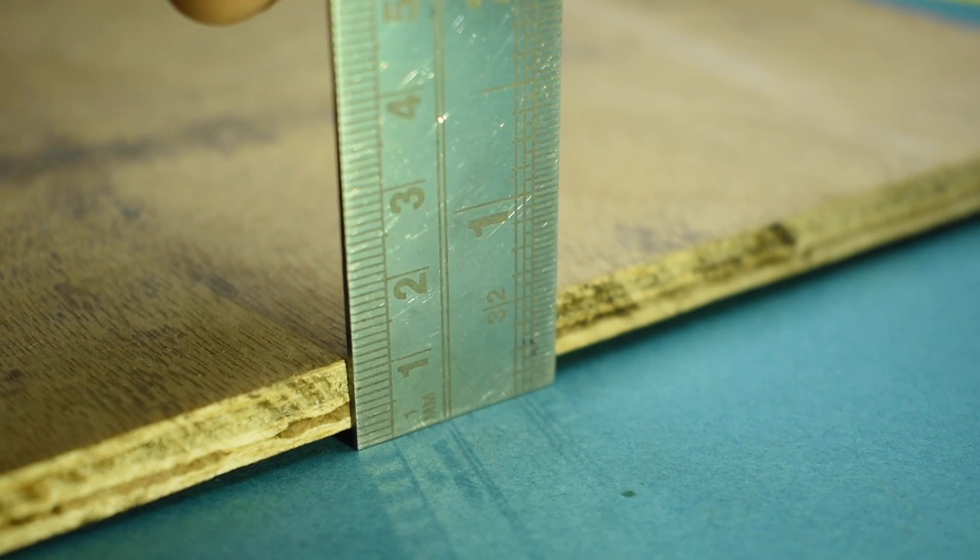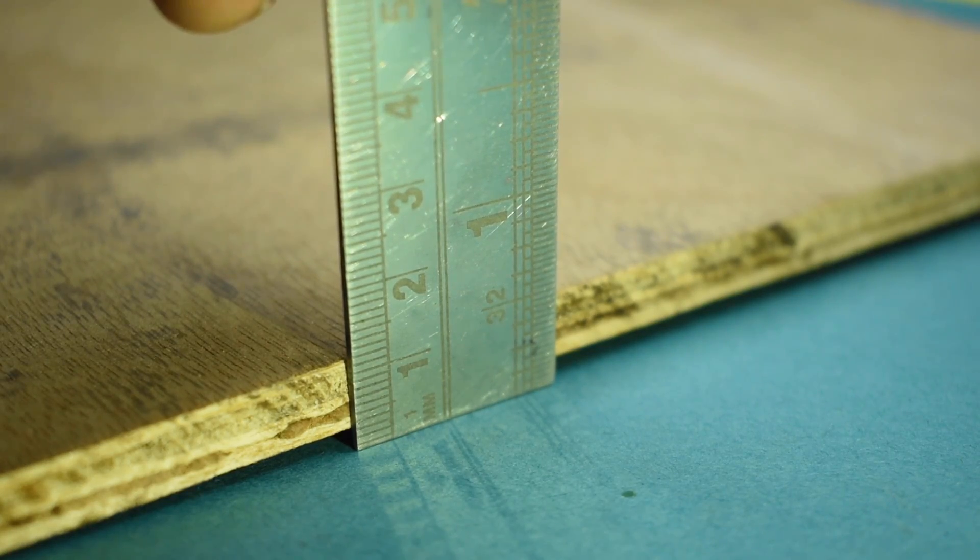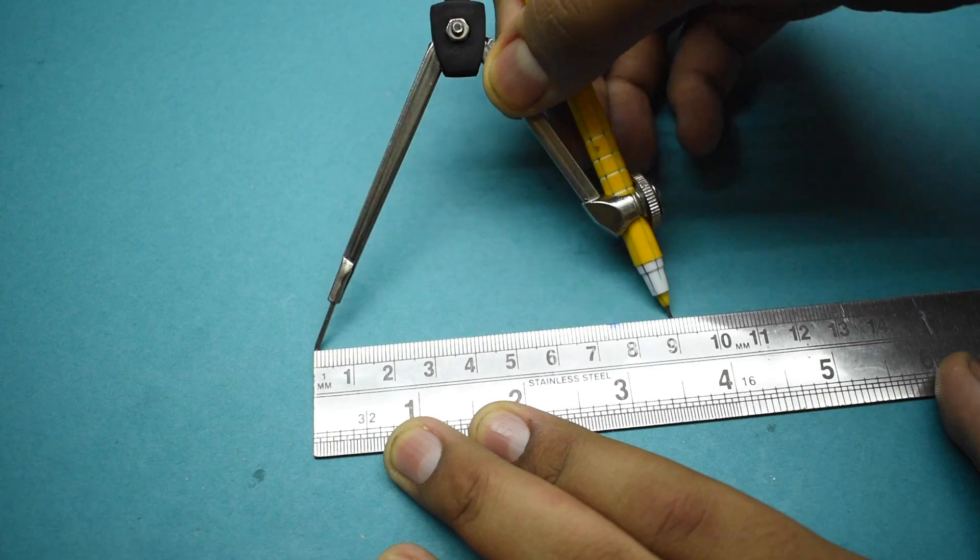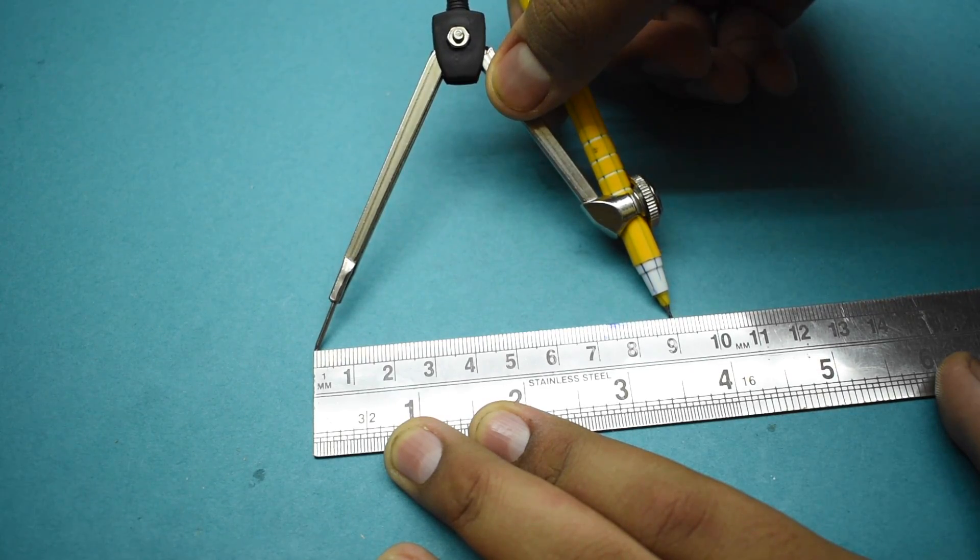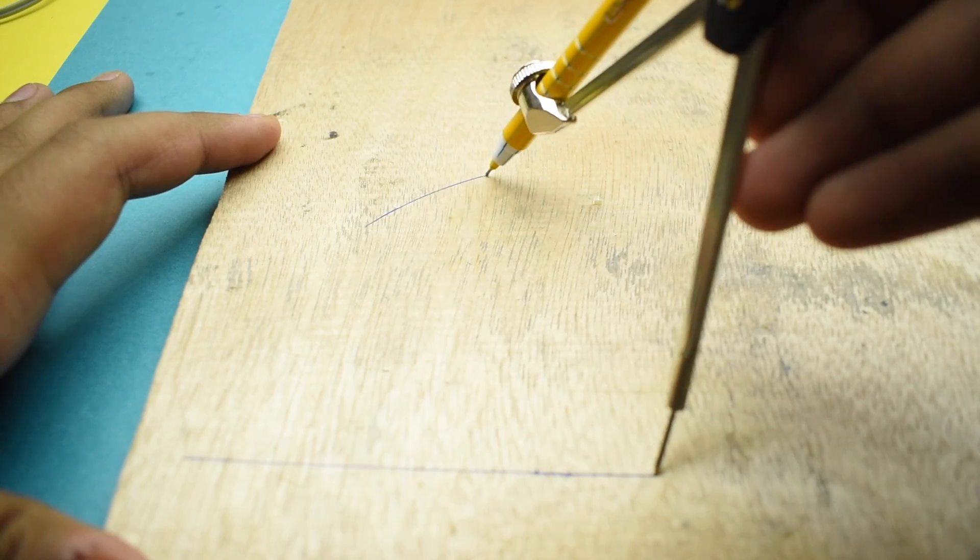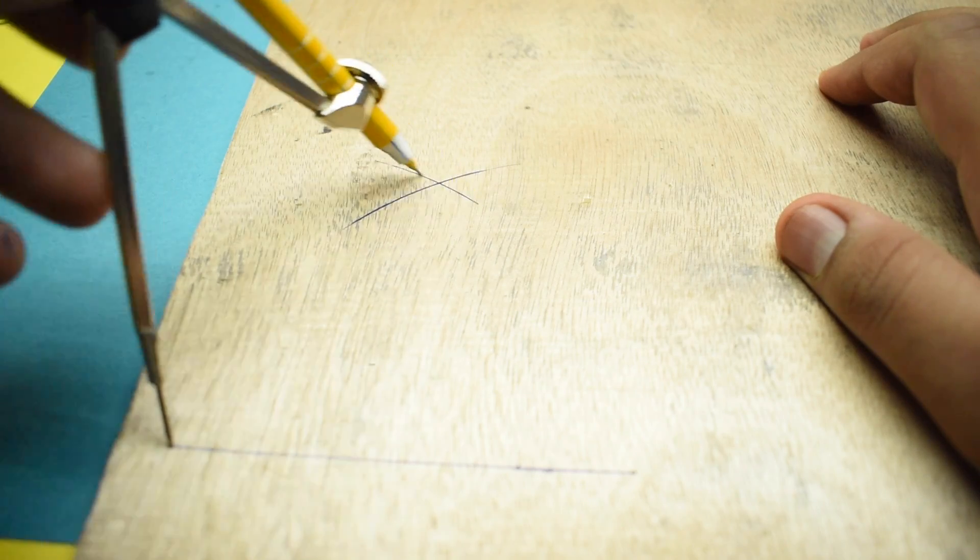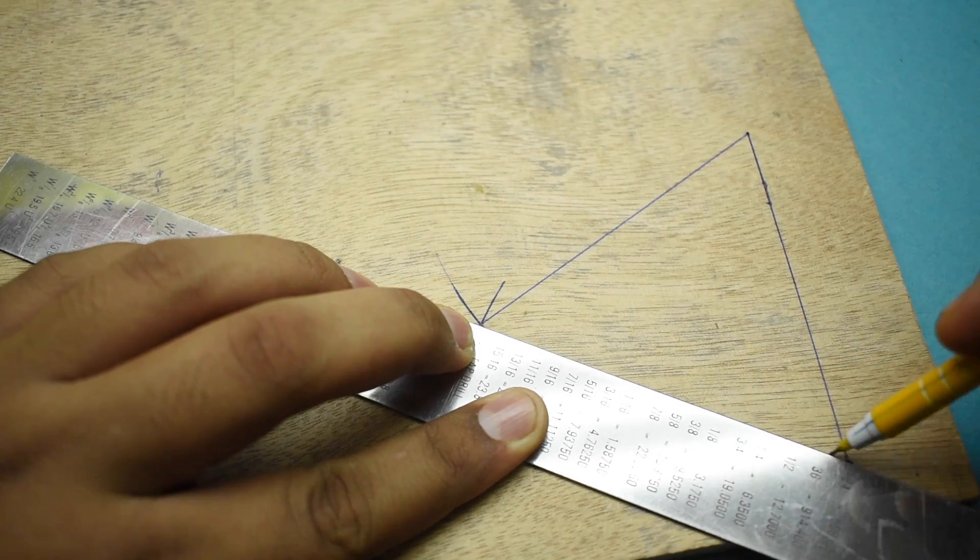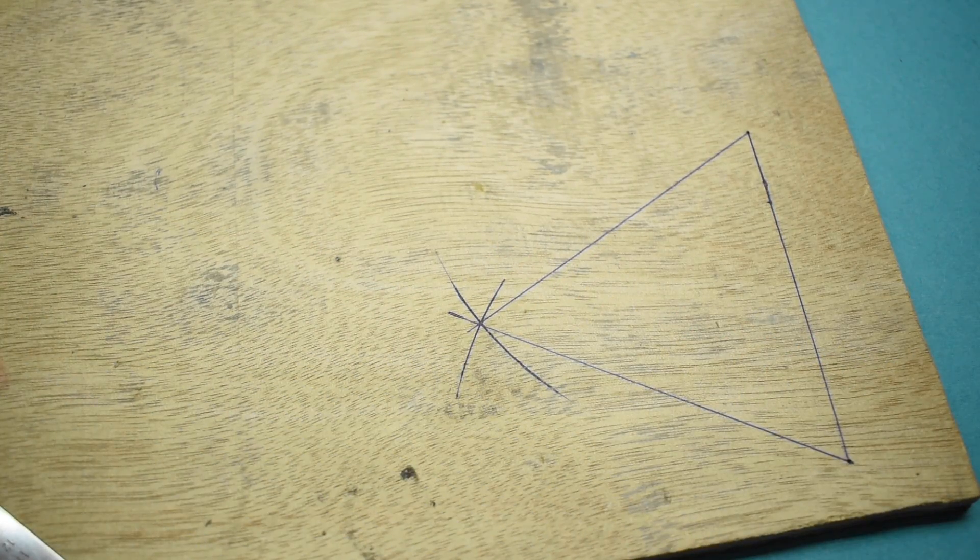For the body of the spinner, I chose this 10mm plywood. I started out by making a 9cm long line on the plywood. I then adjusted my compass to a length of 9cm and made two arcs from the end points of the line. Joining the intersection point of the arcs from the end point of the line will result in formation of an equilateral triangle.